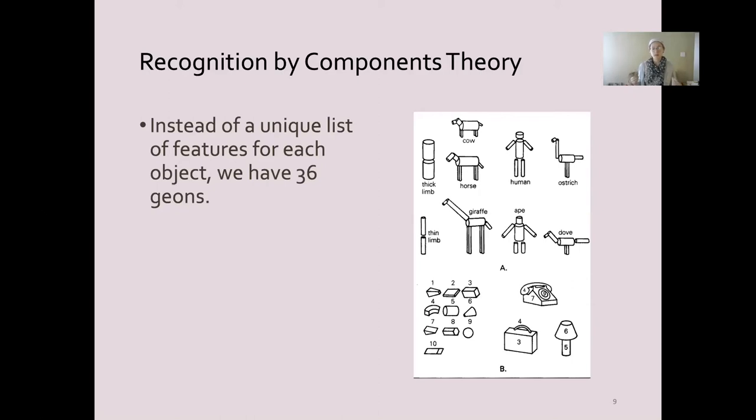There are 36 shapes and everything is made up of combinations of these shapes, just like all of our words in English are made up of combinations of letters. So if you learn to recognize the letters, you can learn to recognize the words by building it up from those.